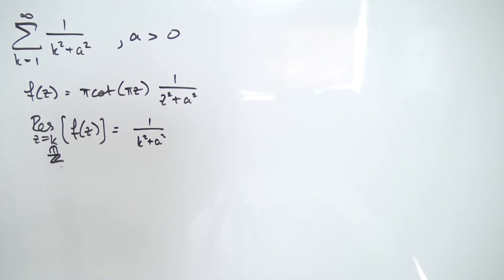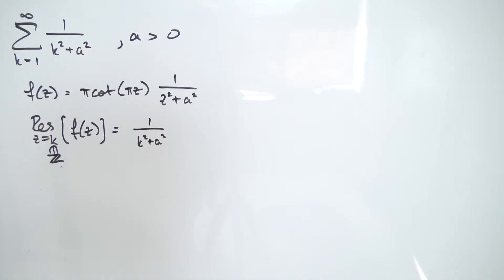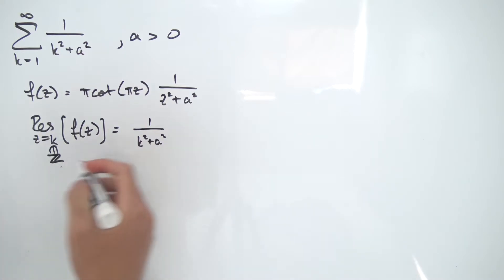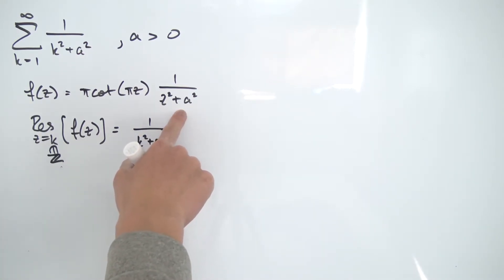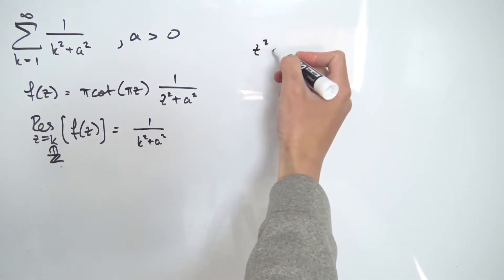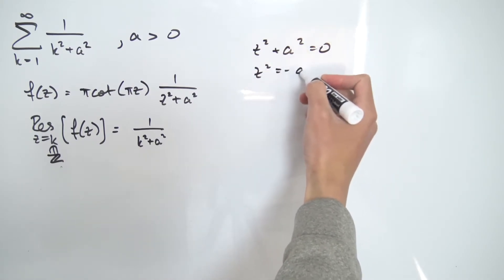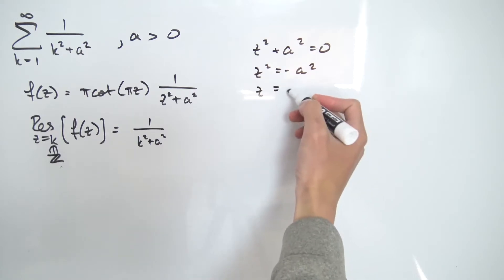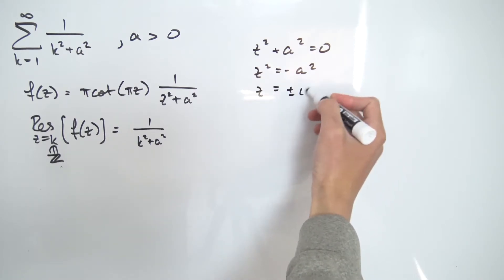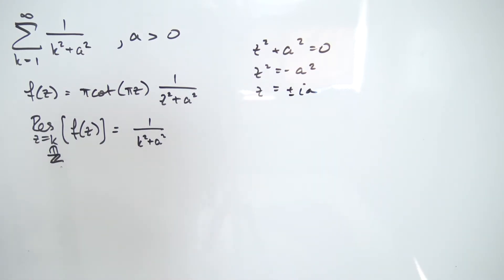There are also poles generated by the factor 1 over (z² + a²), and we must evaluate the residues there as well. Setting the denominator equal to zero: z² + a² = 0 gives z² = −a², so taking the square root (with ±) we get z = ±ia. So we have two additional poles at plus and minus ia.